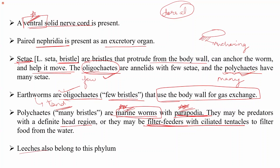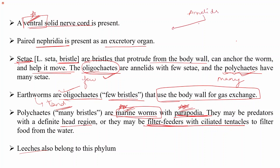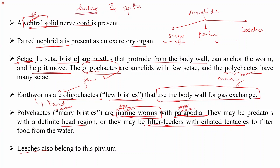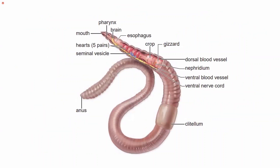Annelida can be divided into three classes: oligochaetes, polychaetes, and leeches (Hirudinea). Oligochaetes have few setae, polychaetes have many setae, and leeches have no setae. Note that setae are the bristles on the surface, while septa are the segments — do not confuse these terms. We will mostly discuss oligochaetes like earthworms, with a brief discussion on polychaetes and leeches.